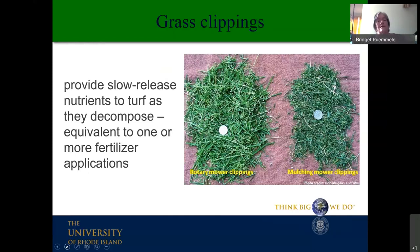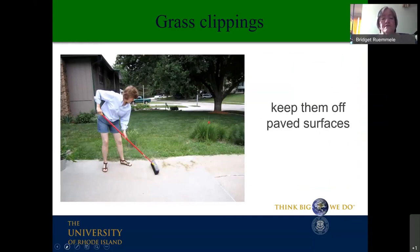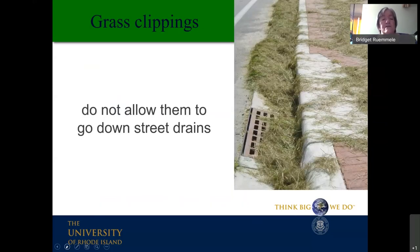Grass clippings provide slow-release nutrients as they decompose, reducing the need for supplemental fertilization. Make sure to keep grass off paved surfaces — because clippings contain nutrients, you don't want them going into waterways. Sweep them off hard surfaces back onto the lawn, or add them to your compost pile. Do not allow grass clippings to go down street drains, as they can reach waterways and harm aquatic life.